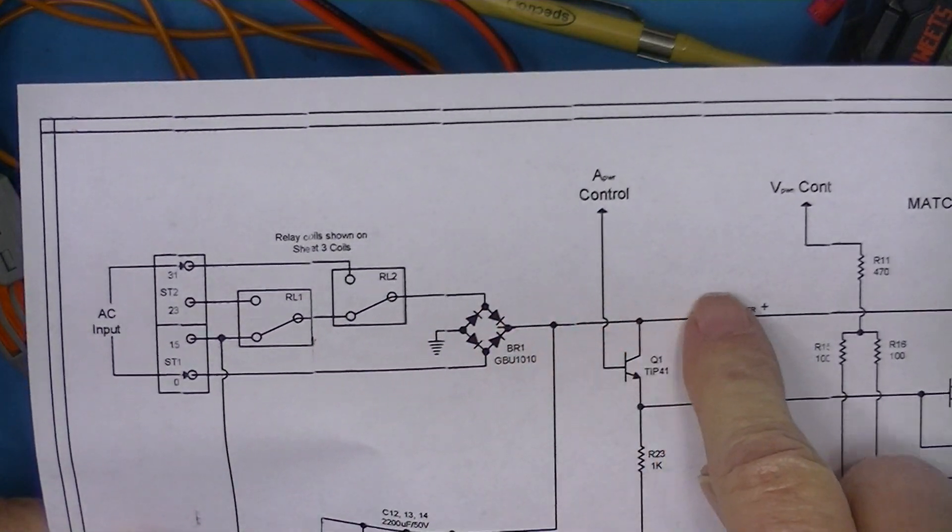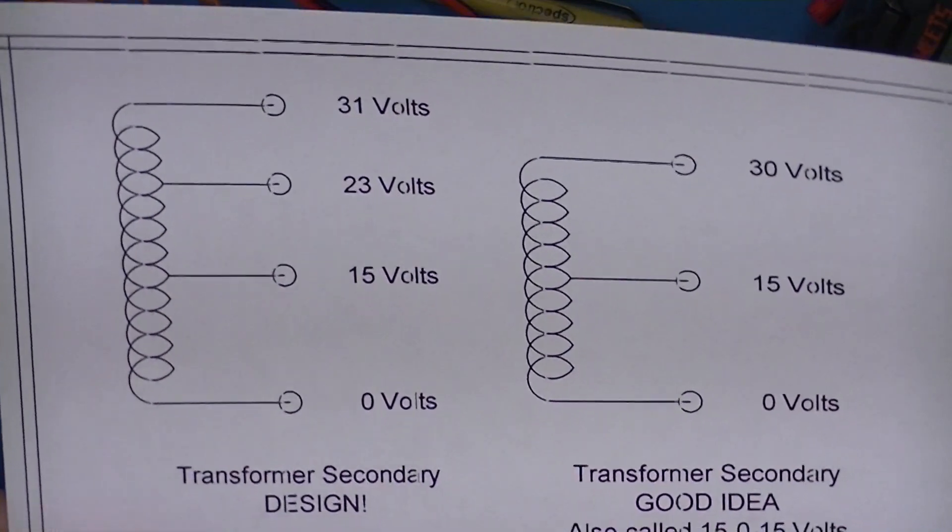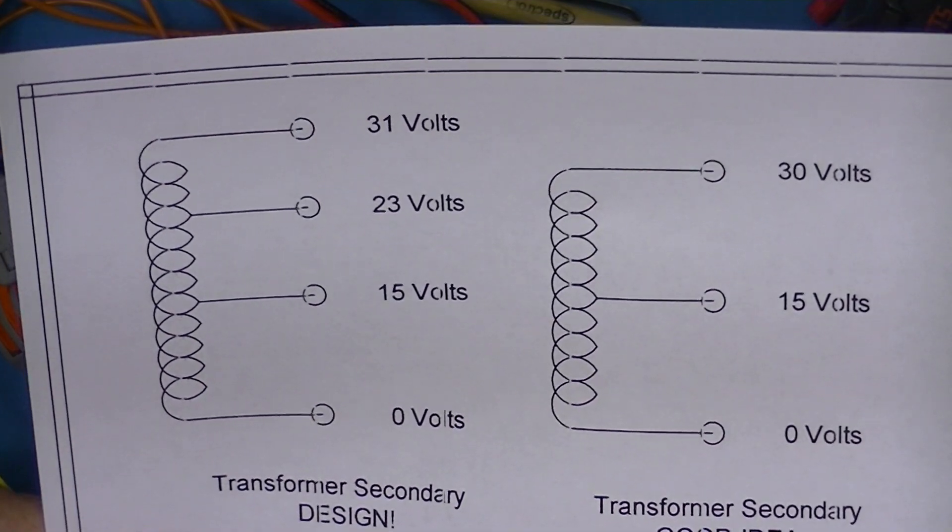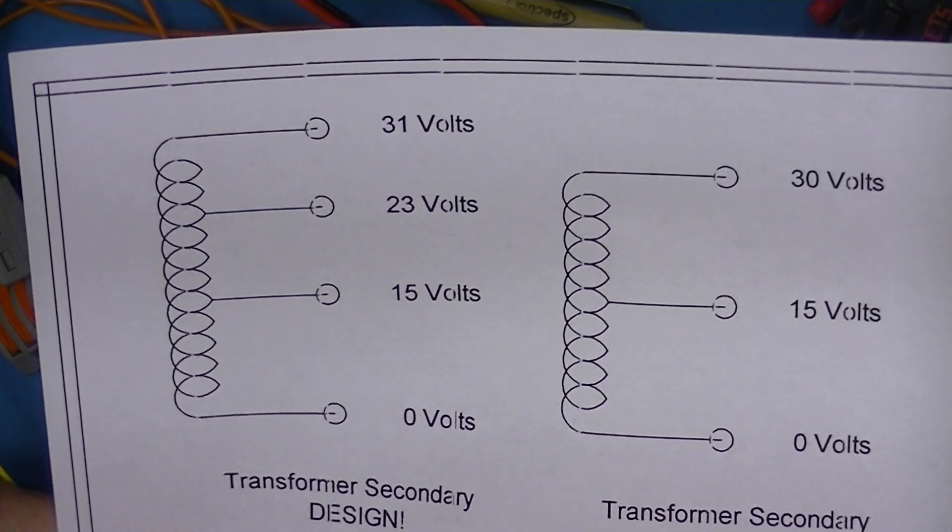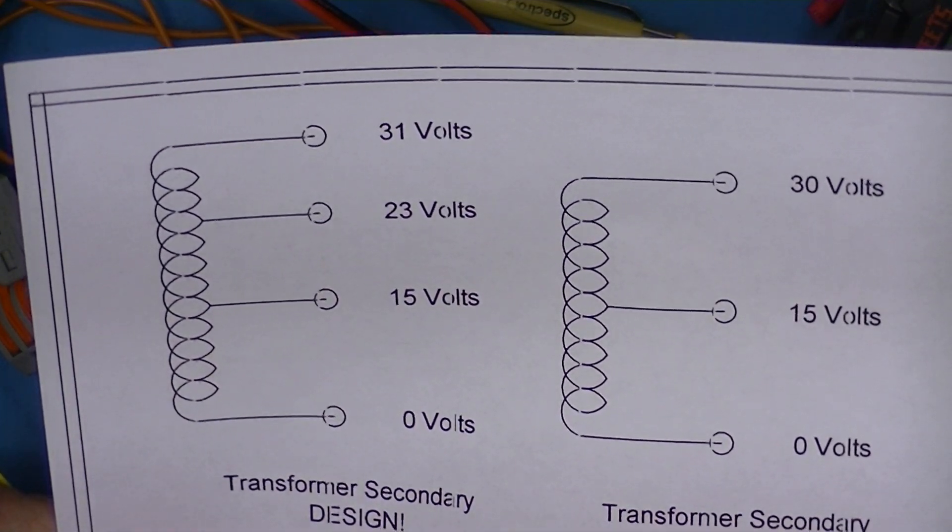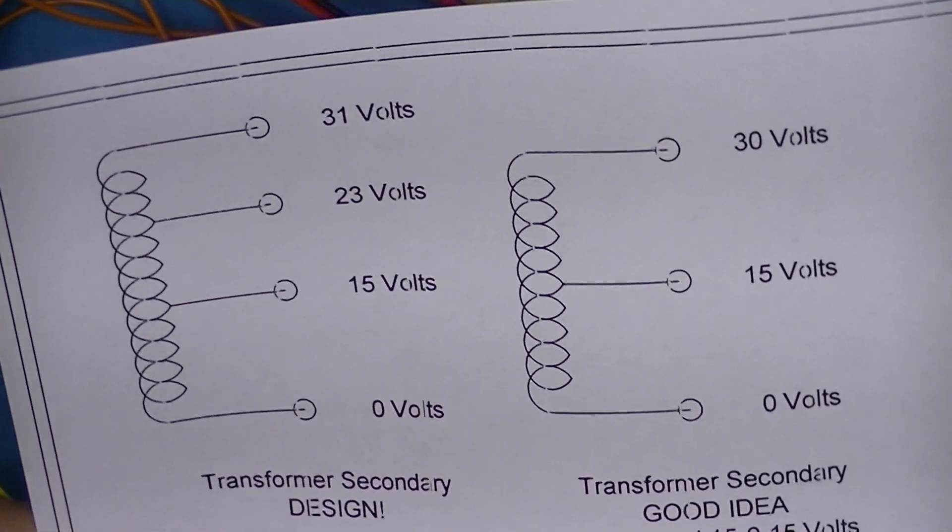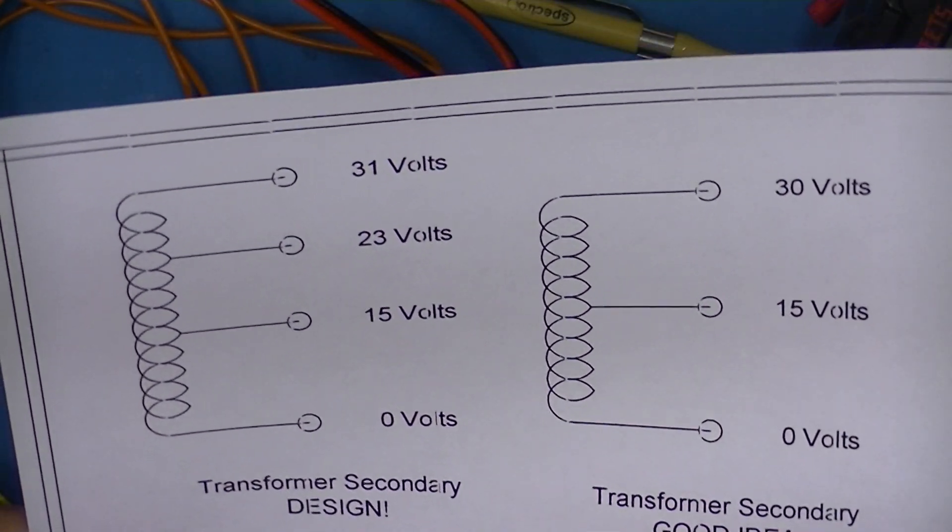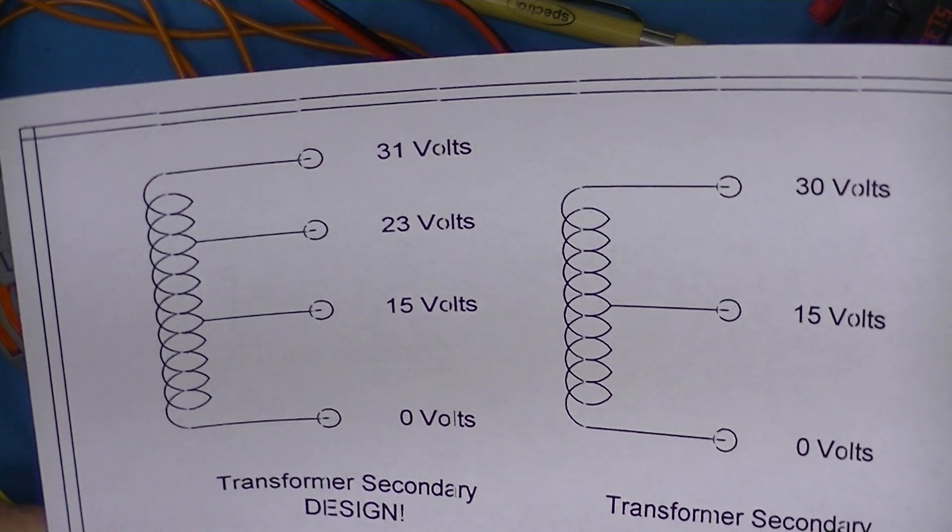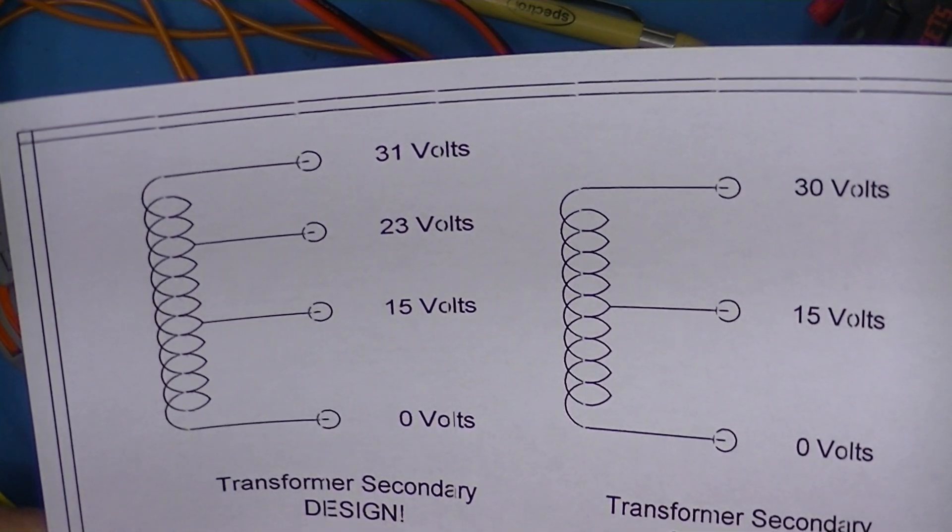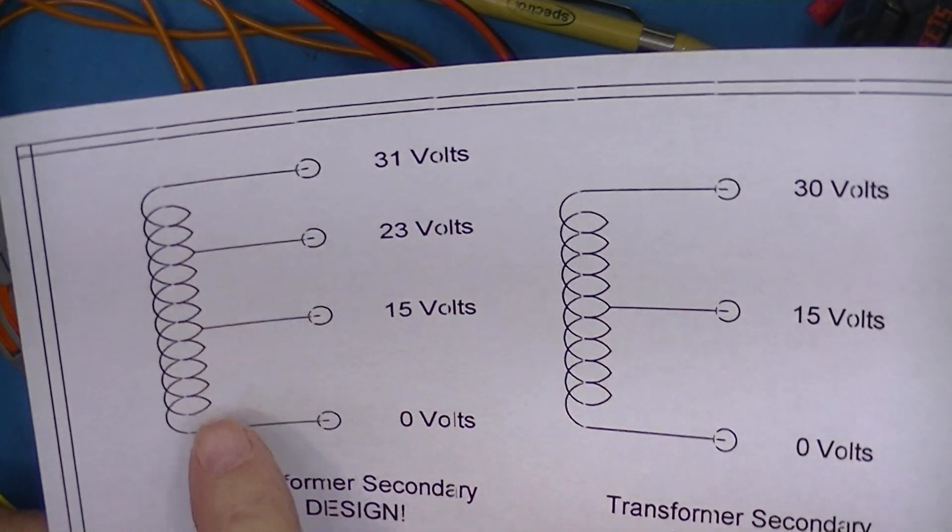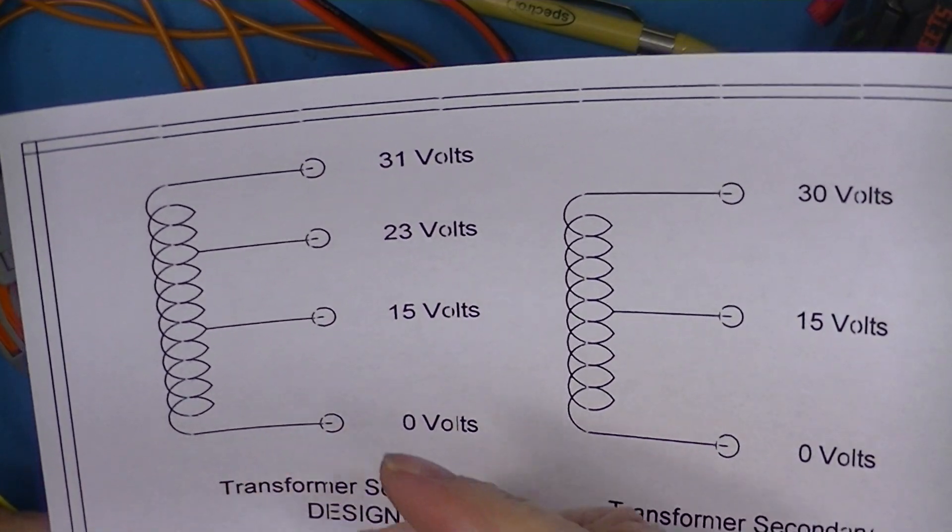I haven't a clue where to obtain a transformer like this since the transformer is not furnished as part of the kit. The individual kit builder would have to find a transformer. Now let me say this applies to all these transformers, whatever secondary whatever output current you desire 3, 4, 5, maybe 6 amps, the current rating would have to be equal to what you desire.